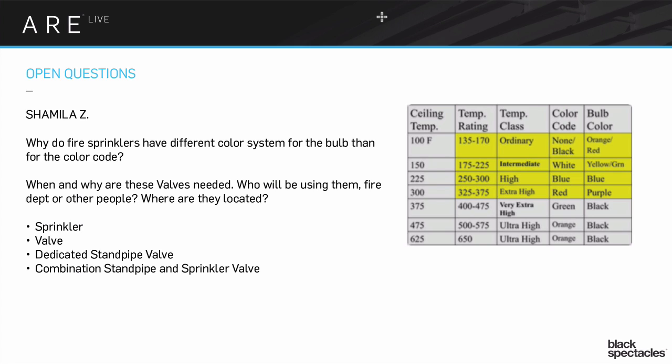There are a lot of different types of sprinklers. For example, in a server space or computer room, you wouldn't want a water-based sprinkler system — it would trash all the servers. So you would use a chemical-based system designed to take away the oxygen. That's a different kind of sprinkler system.